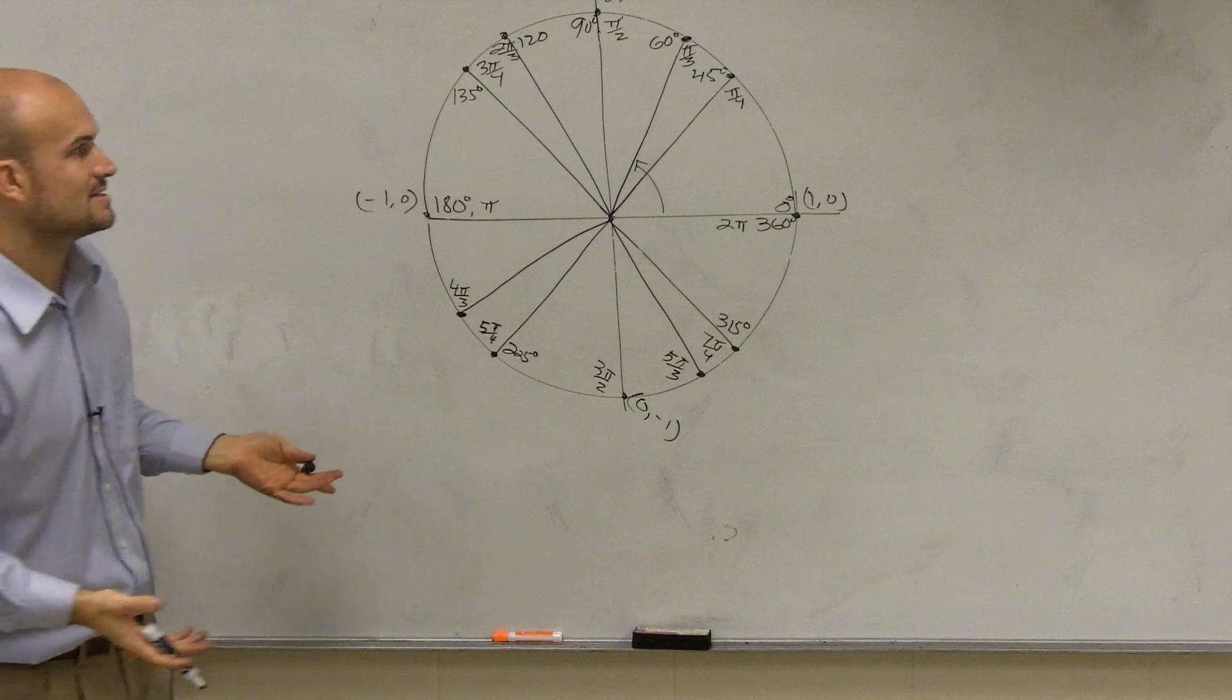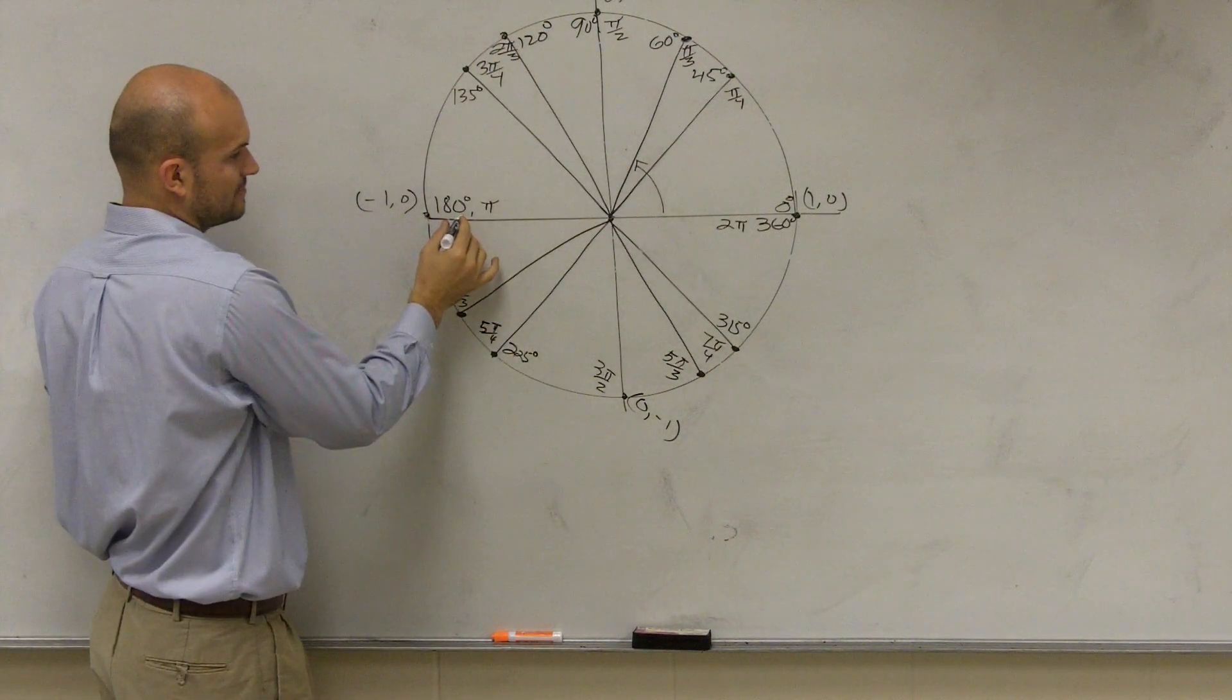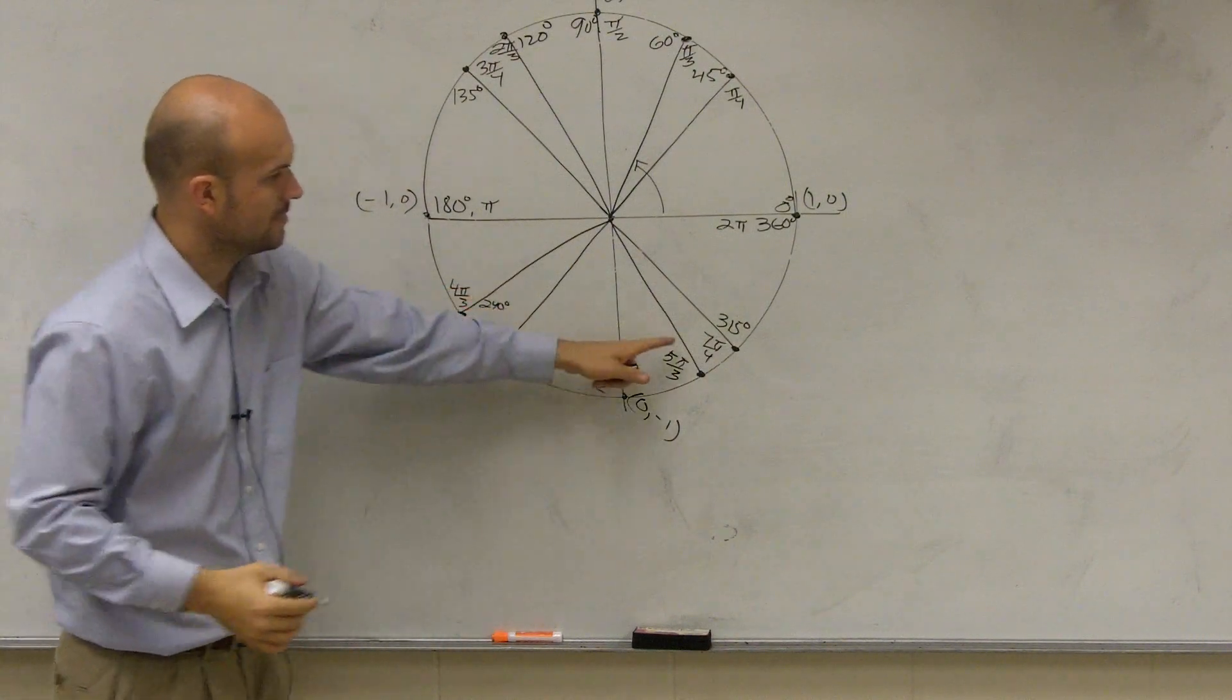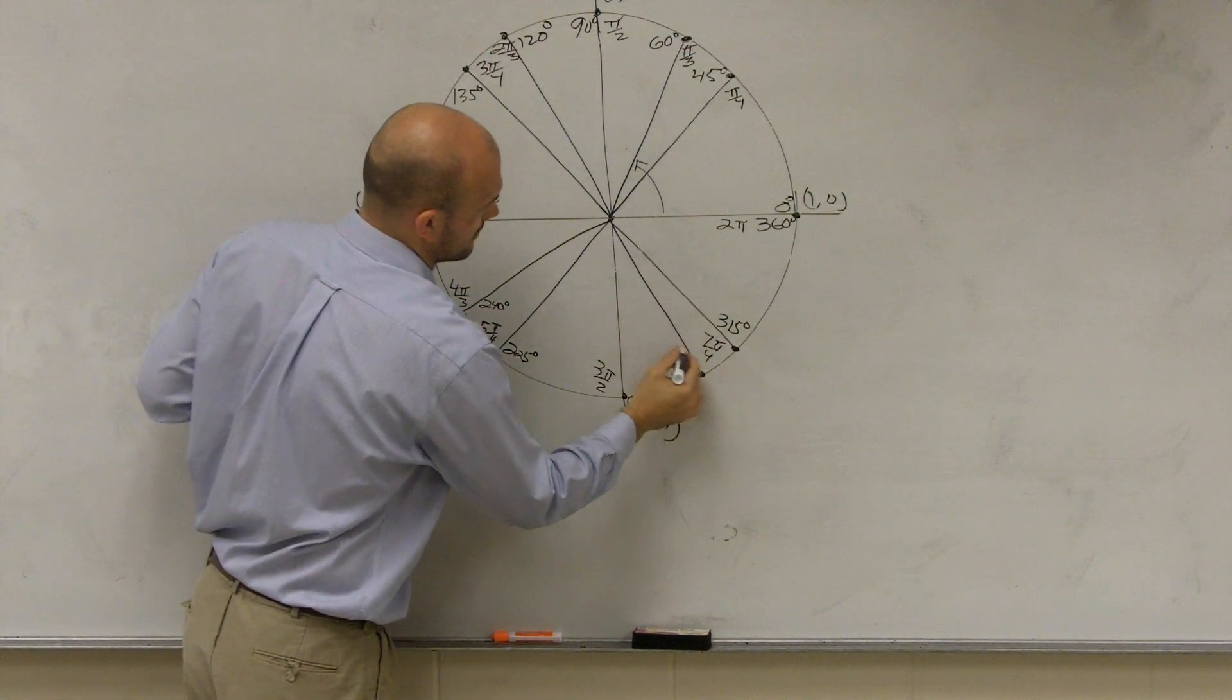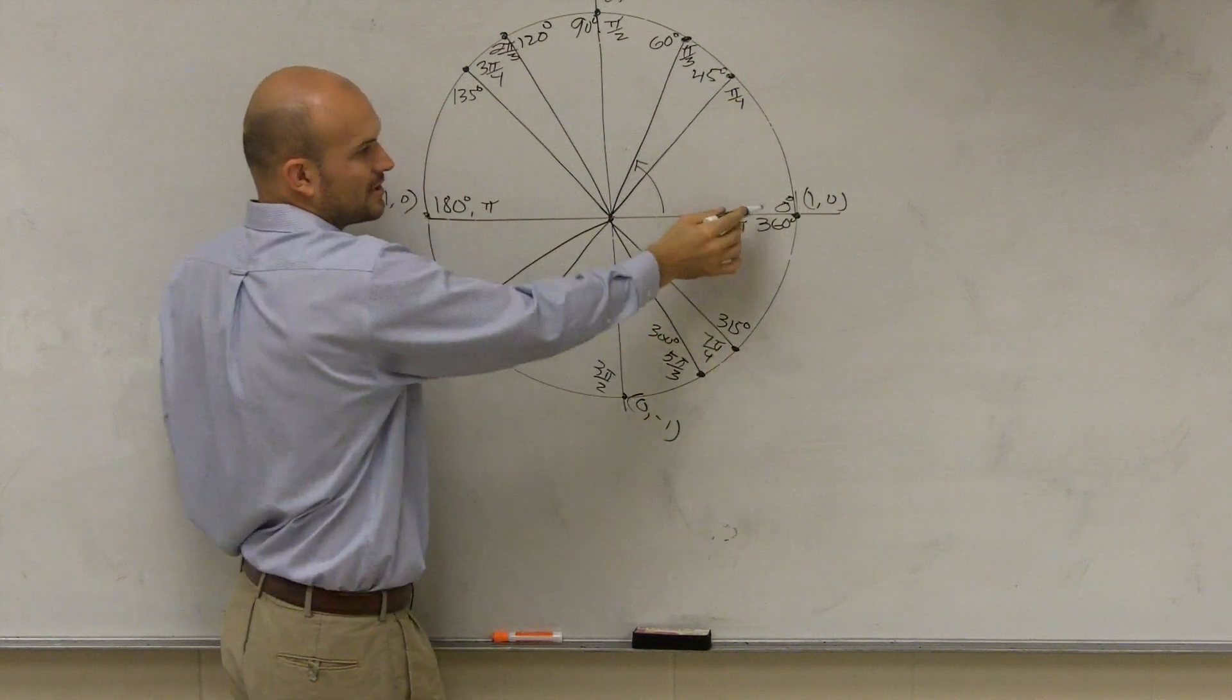So now once I did the radians, let's just add it. 60, 120, 180, 240, 300. I kind of don't have my space. 300 and then 360.